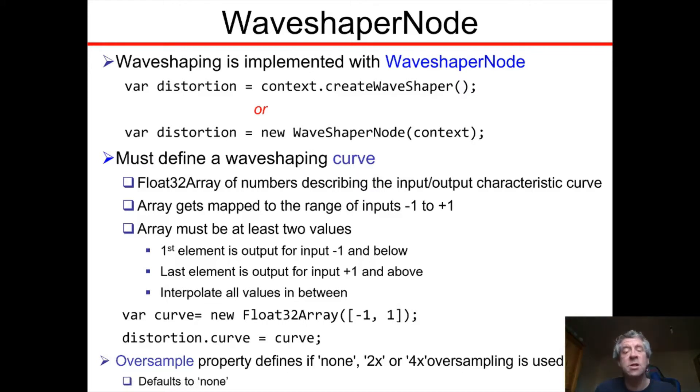Does this actually do anything? Yes it does, because the wave shaper assumes that anything below -1 input is fixed to whatever is the output at -1, and similarly +1. So applying a curve like this will clip the signal to the range -1 to +1.